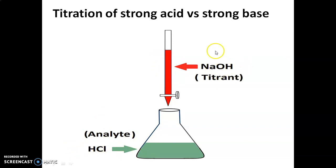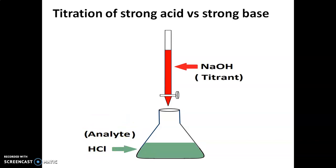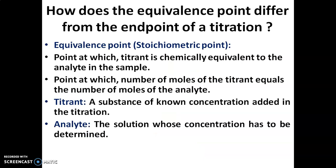NaOH is the titrant and HCl is the analyte. The particular point where the number of moles of NaOH equals the number of moles of HCl is the equivalence point, meaning NaOH is chemically equivalent to HCl at that particular point, which is called the equivalence point.